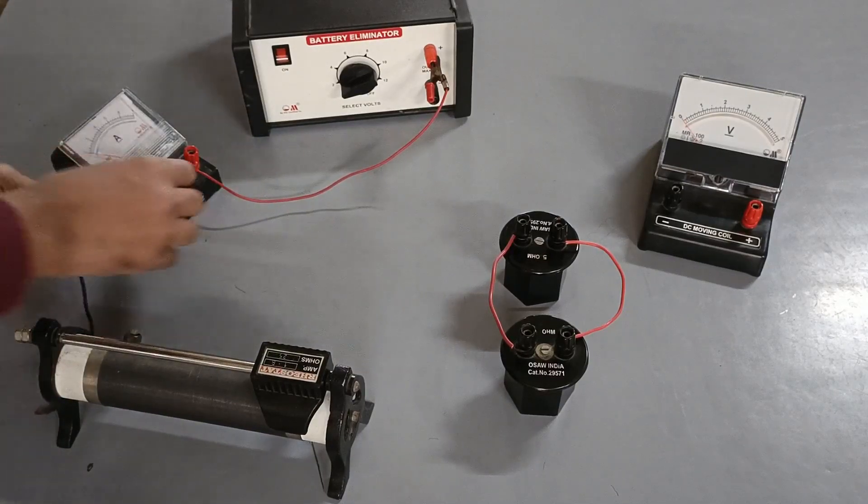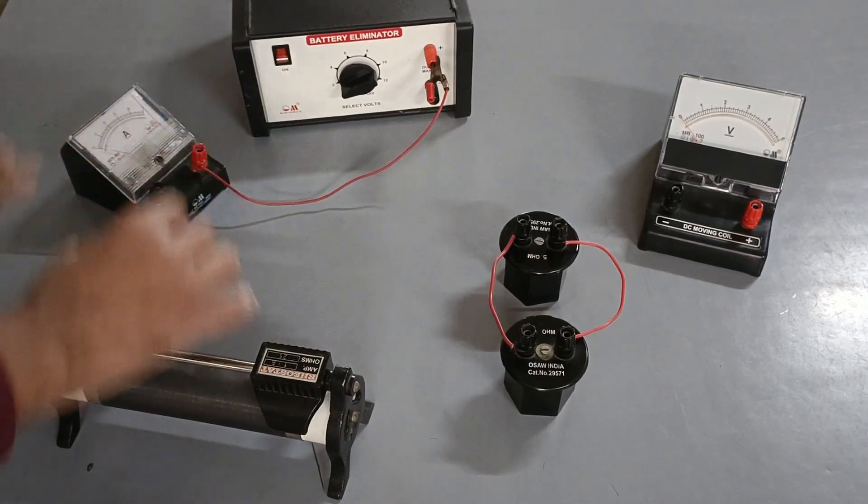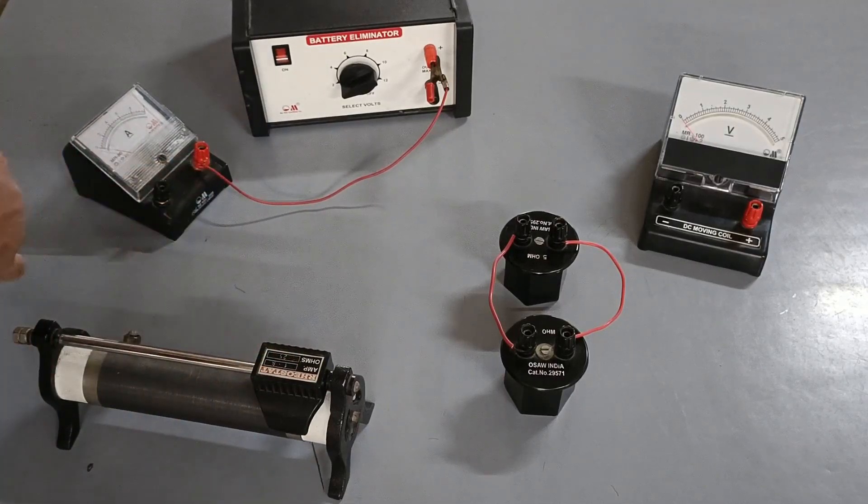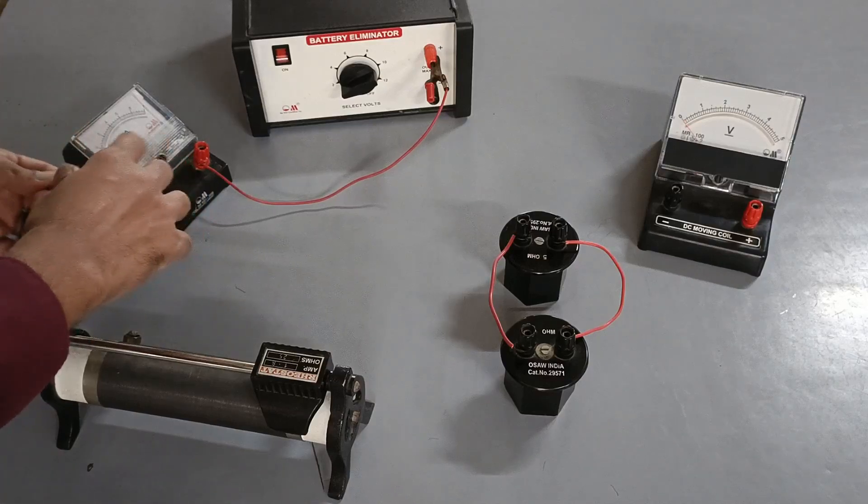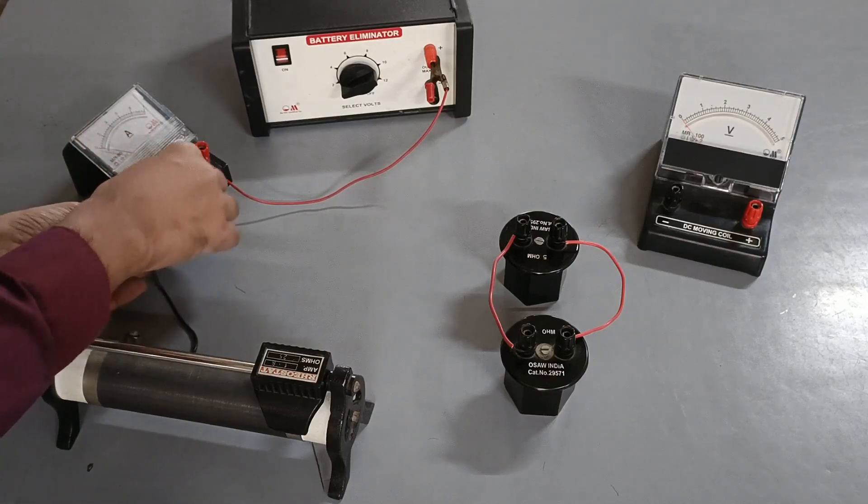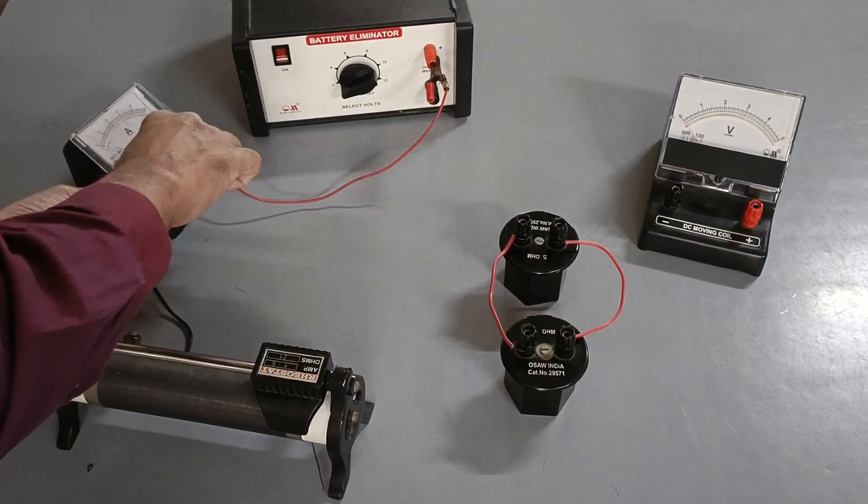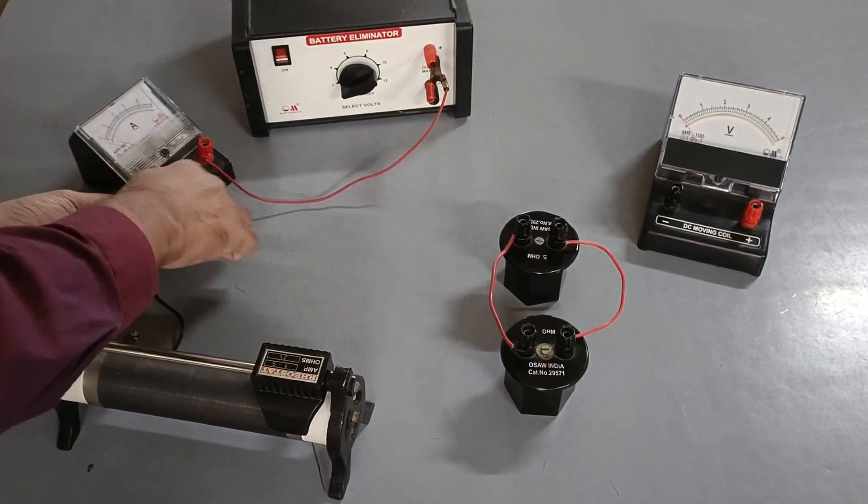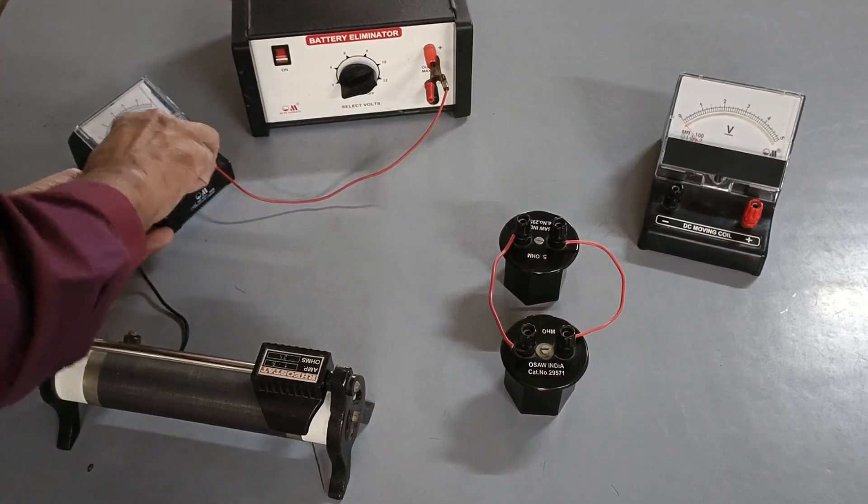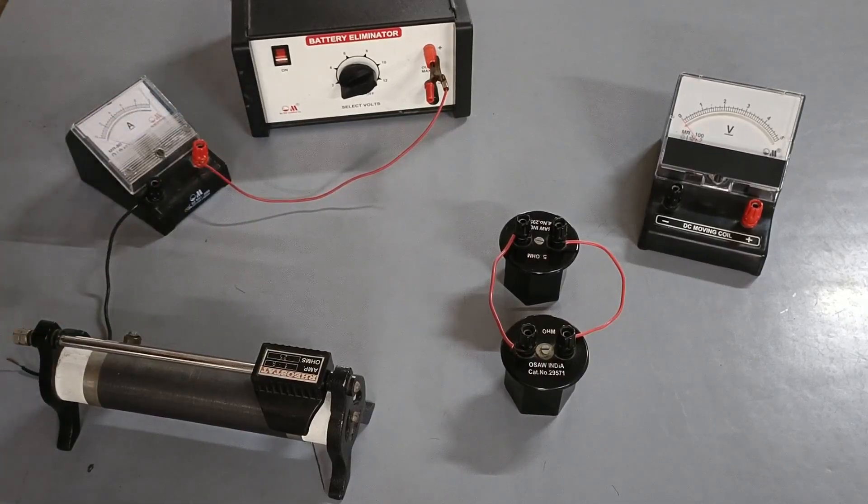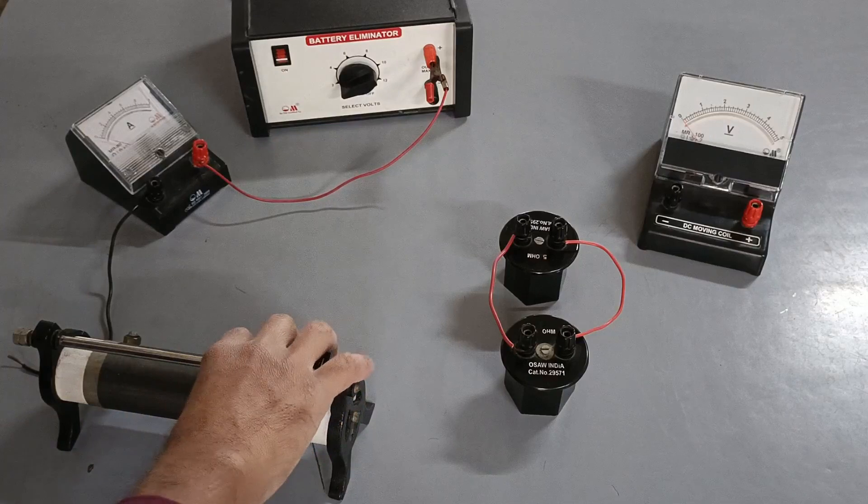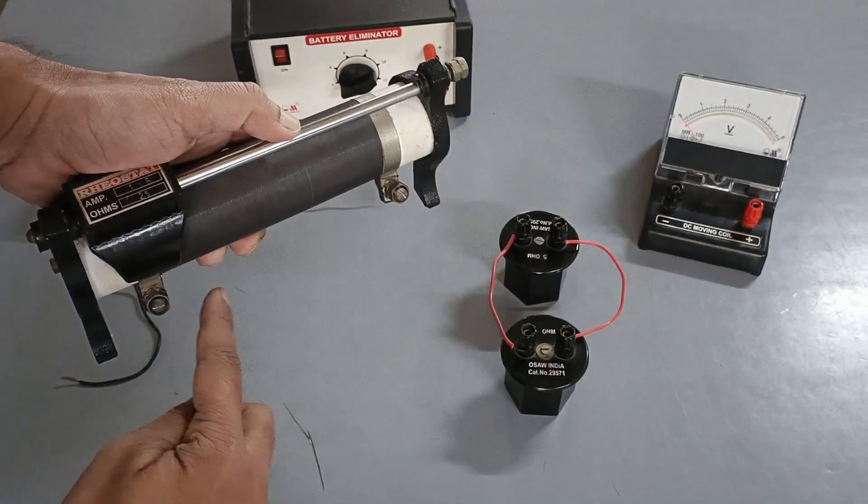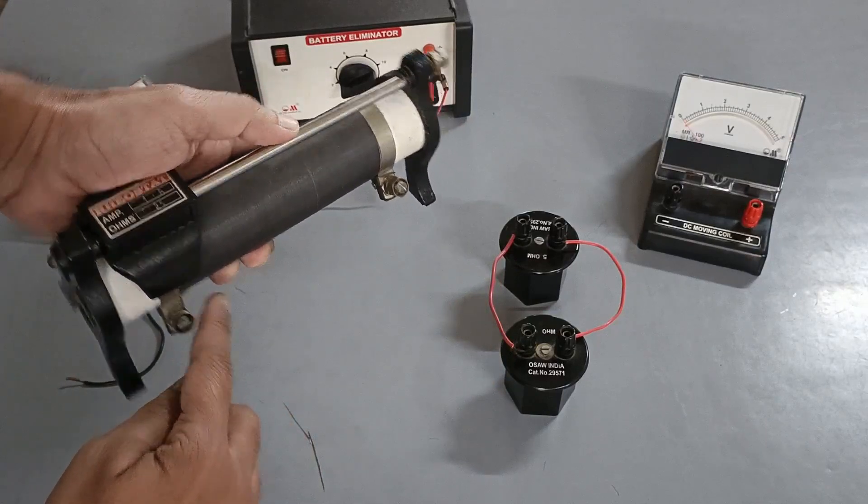Connect the negative black terminal of the ammeter with this end of the rheostat. While connecting the rheostat, use these two terminals for rheostat to behave as the variable resistor.